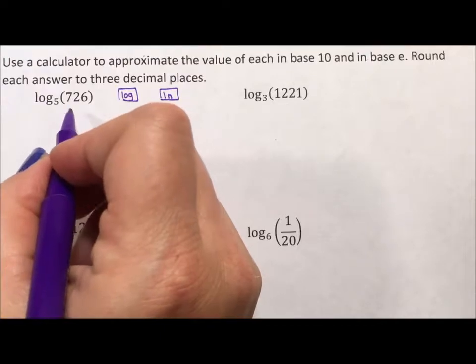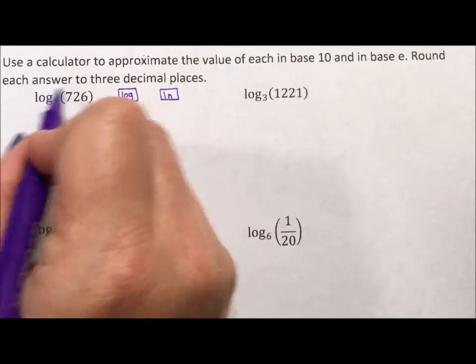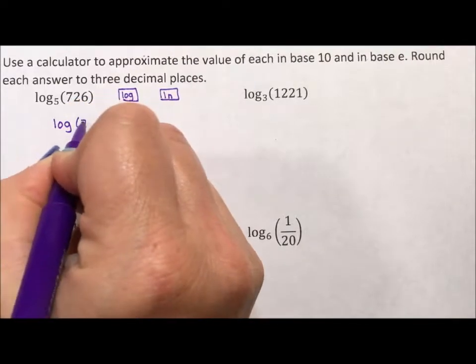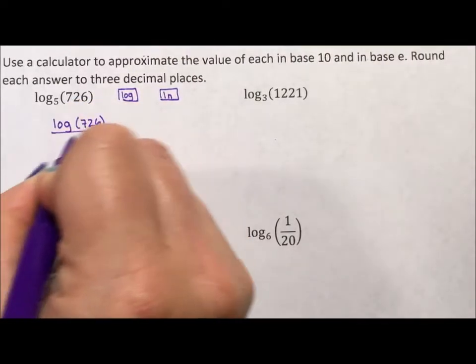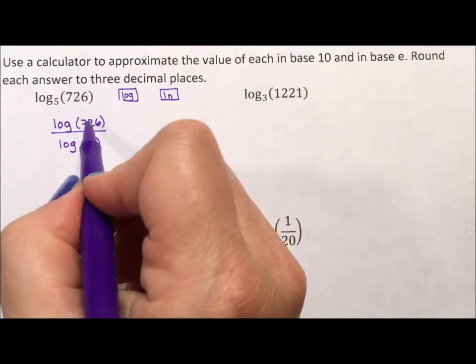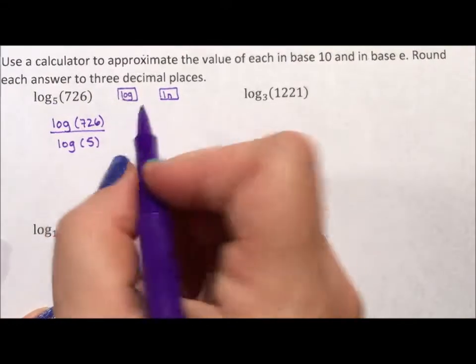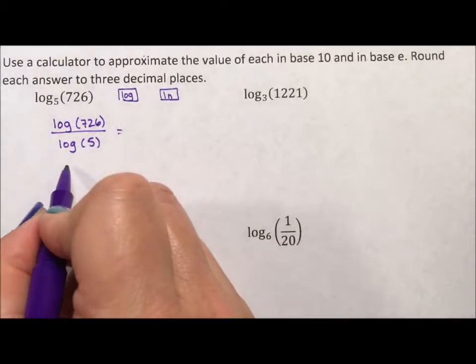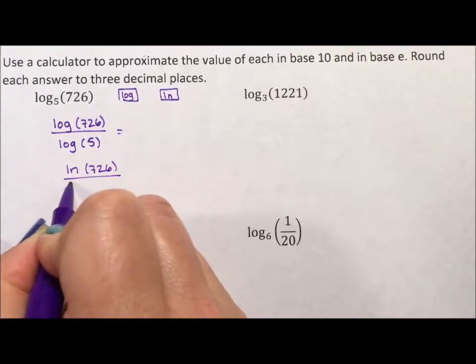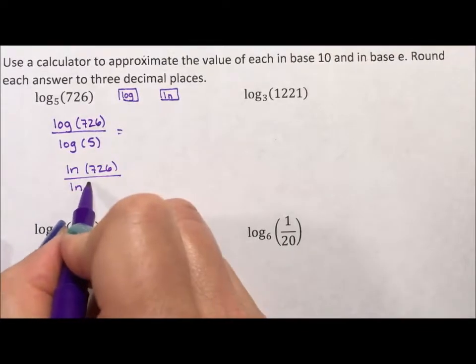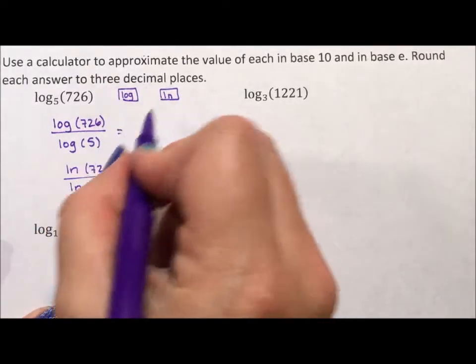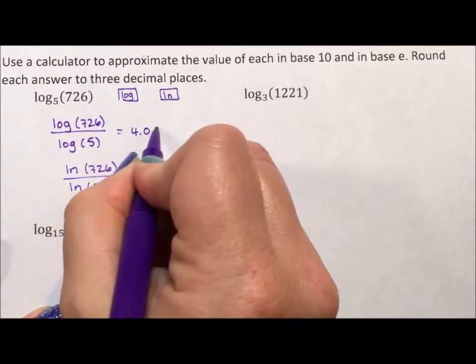The thing is the change of base formula says to calculate this in your calculator, all you need to do is log base 10 of 726 divided by log base 10 of 5. It's easy to remember: the big number goes on top, the little number goes on the bottom. The thing is you can do it with log or natural log. You could do the natural log of 726 divided by the natural log. Remember that's an L of 5. If I plug this into my calculator rounded to three decimal places I get 4.093.